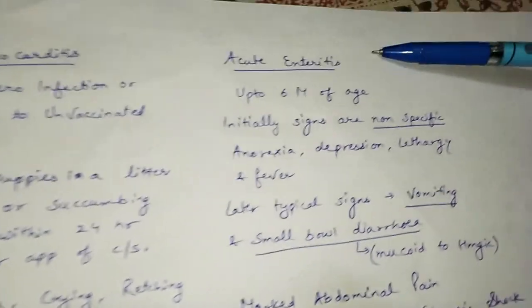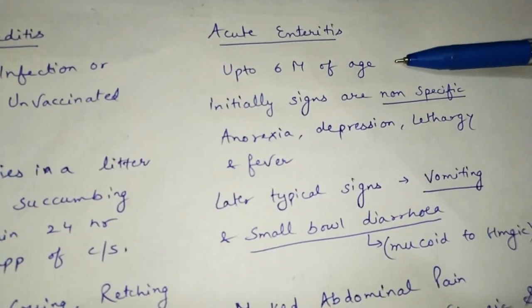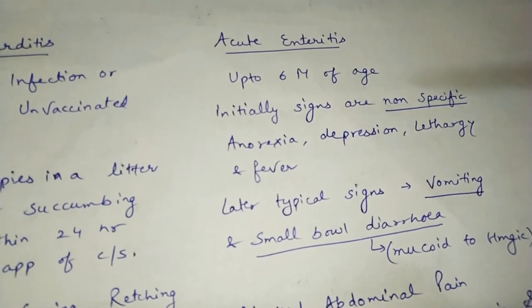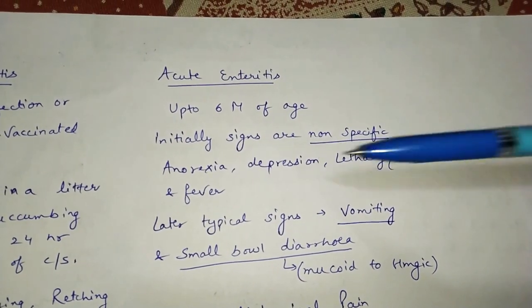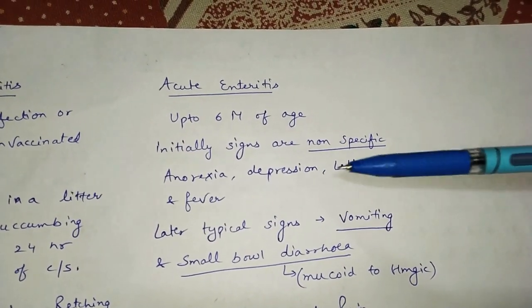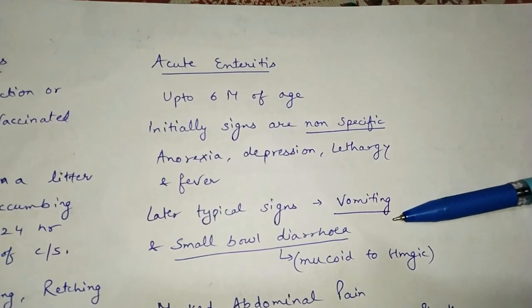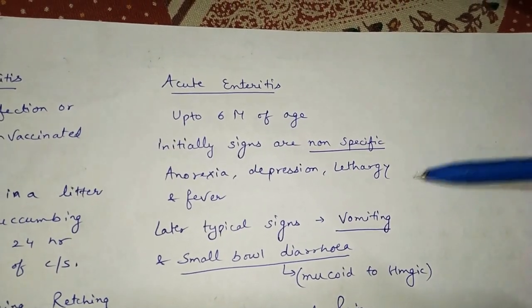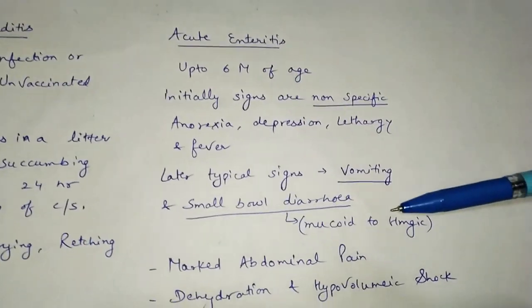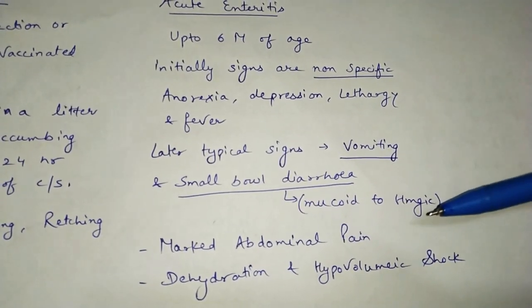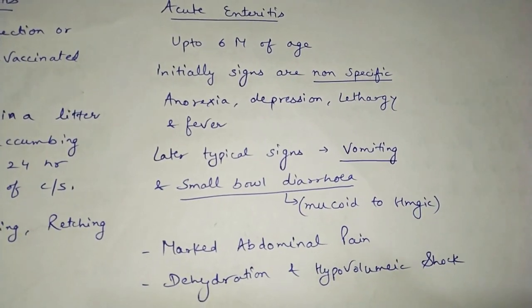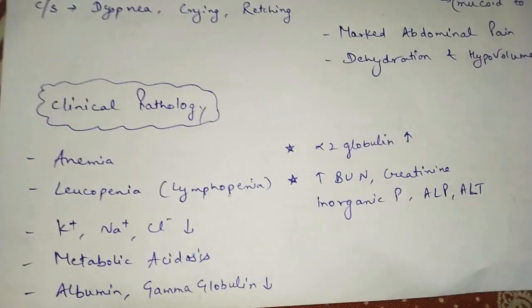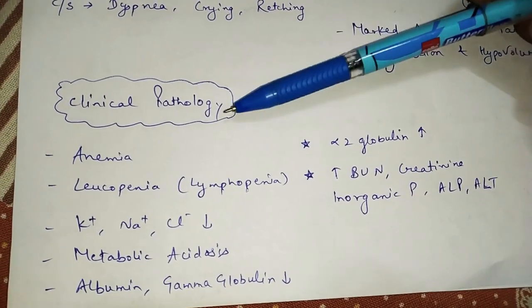The acute enteritis form occurs in dogs up to six months of age. Initial signs are non-specific and include anorexia, depression, lethargy, and fever. Later, typical signs appear like vomiting and small bowel diarrhea, which is hemorrhagic in nature. There is marked abdominal pain, dehydration, and hypovolemic shock.